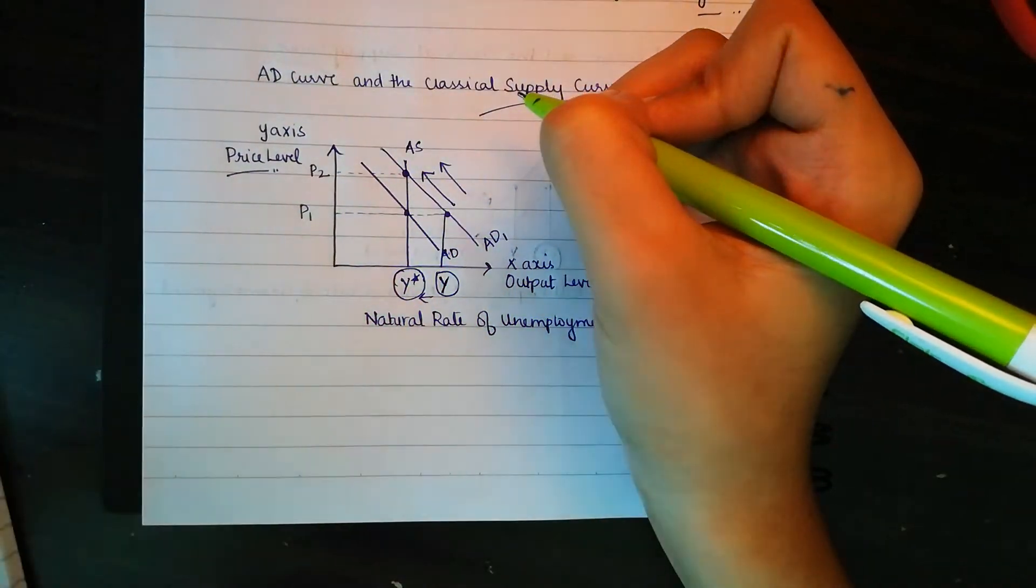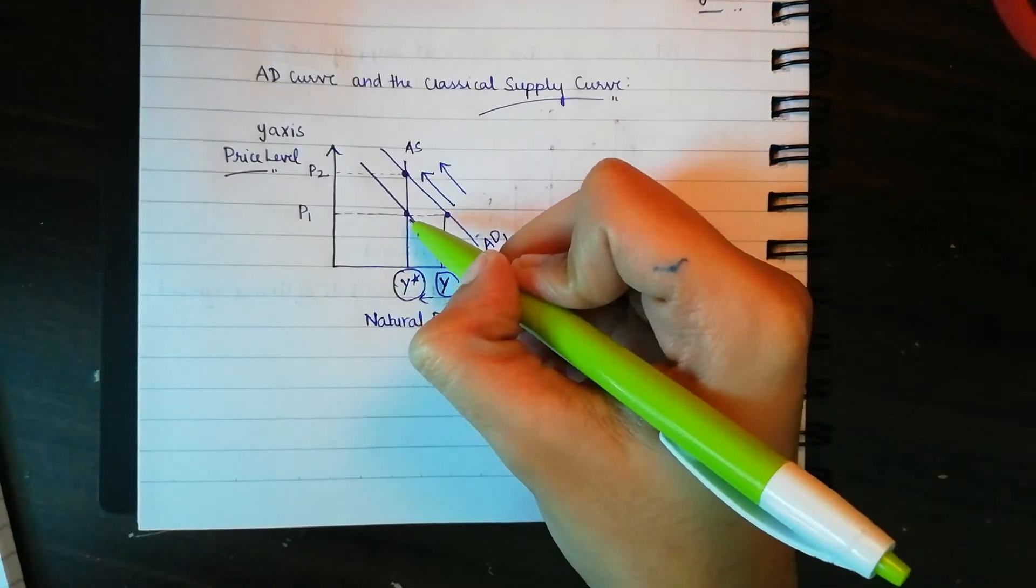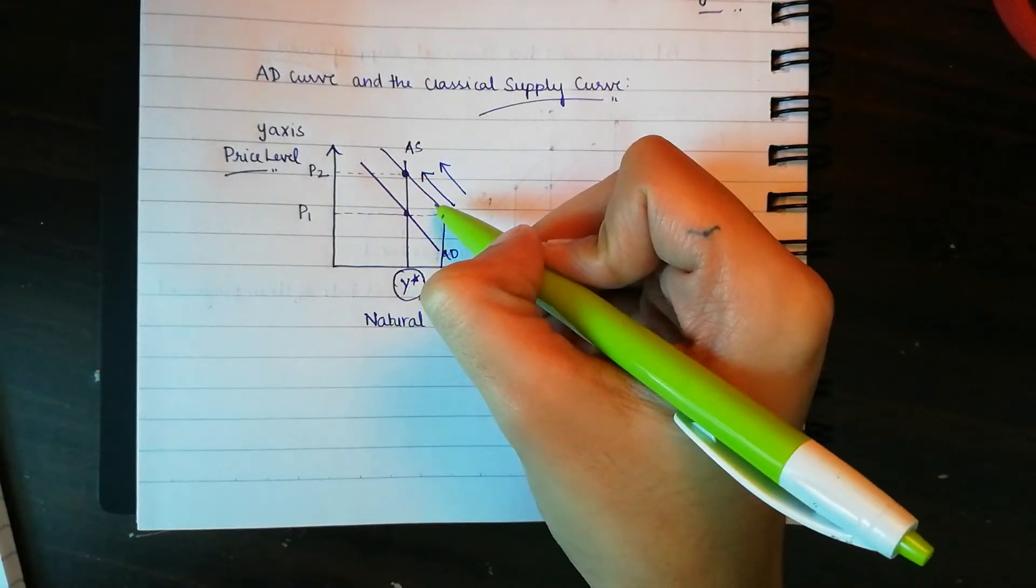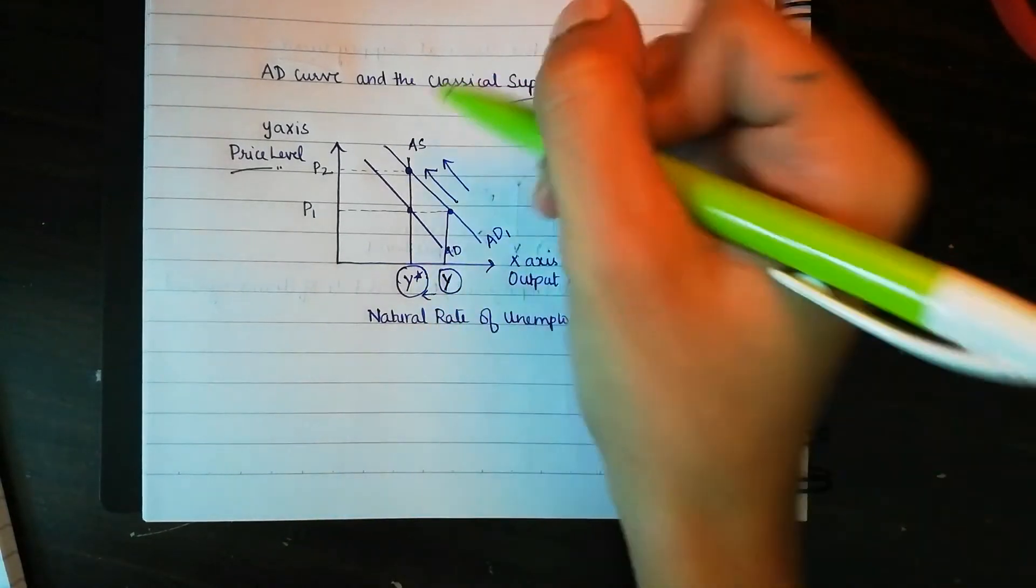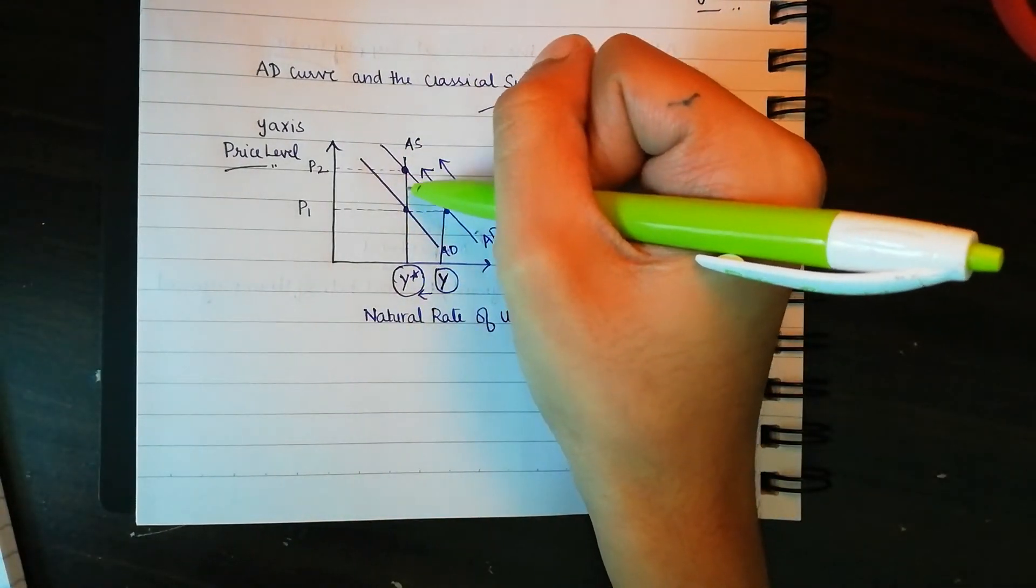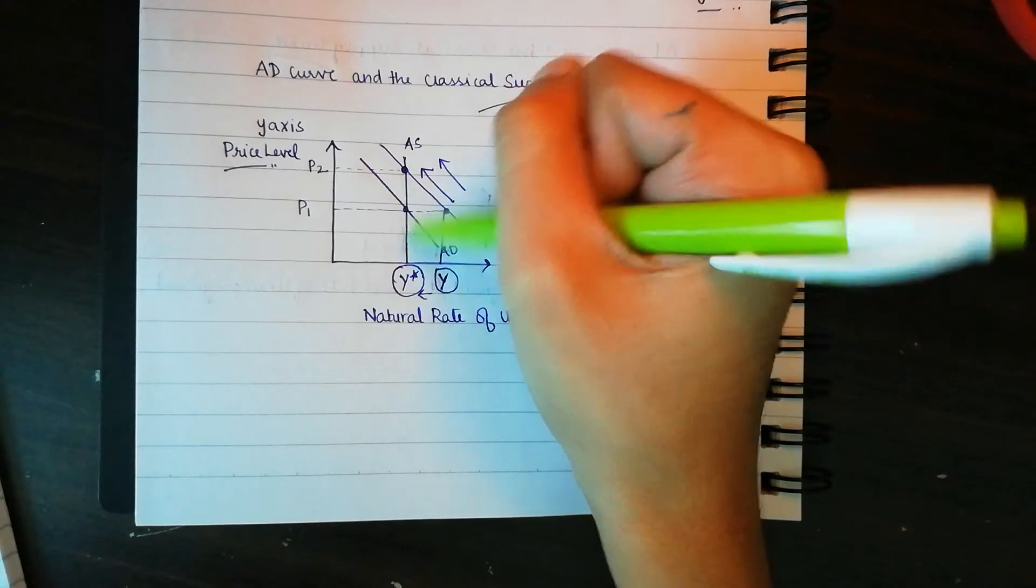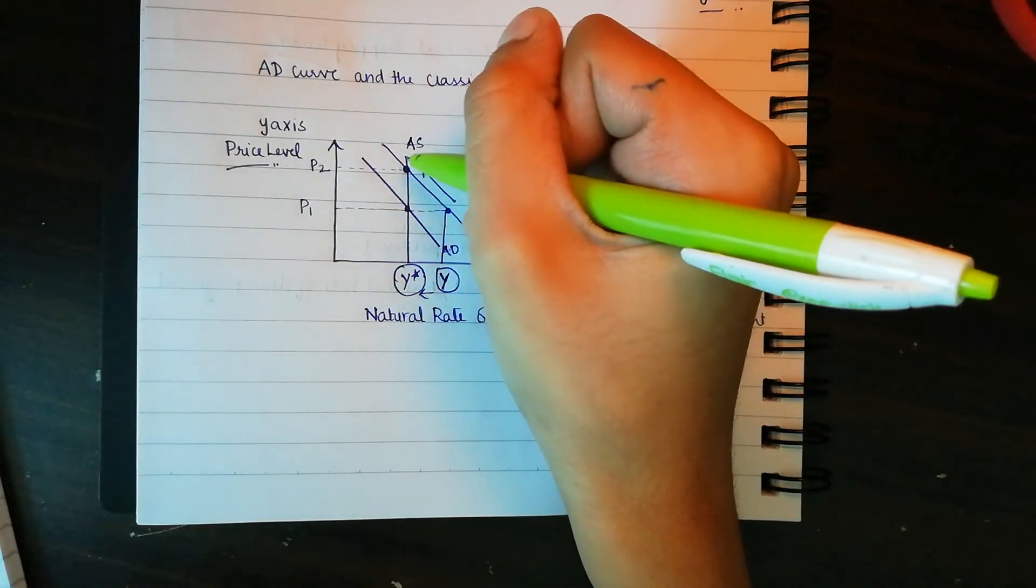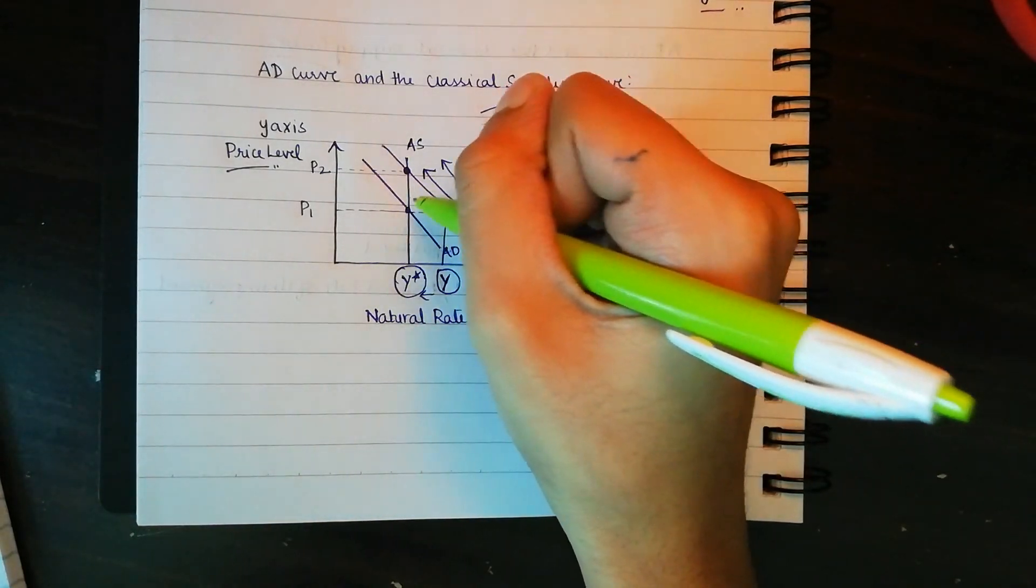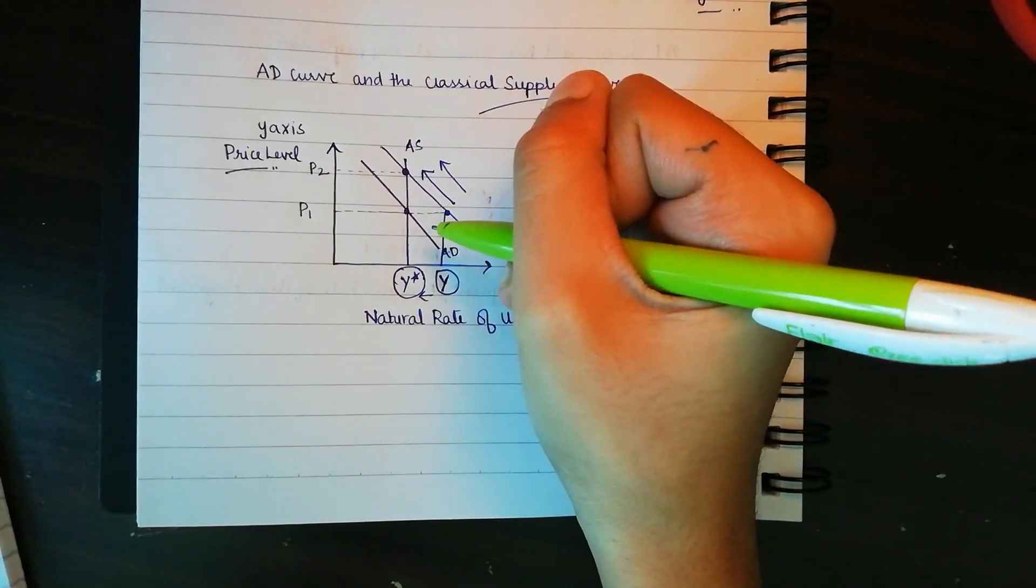So in this scenario, the increase in demand, the shift in demand, does not lead to a higher output but rather it leads to a higher price for the same output produced. Not more output, but the same output for higher price. That's what happens when the aggregate demand shifts to the right in a classical supply curve.